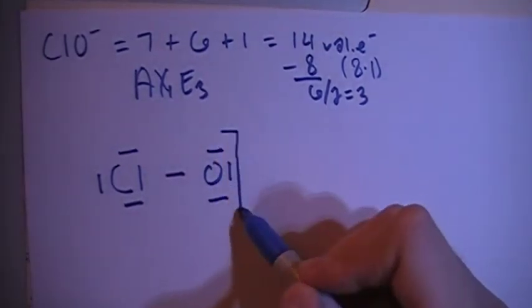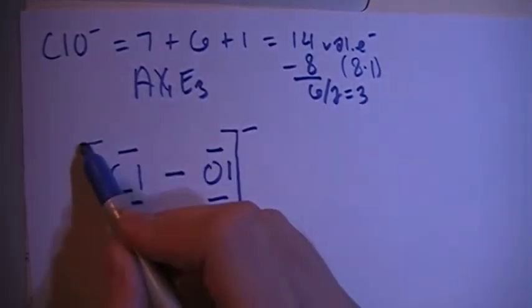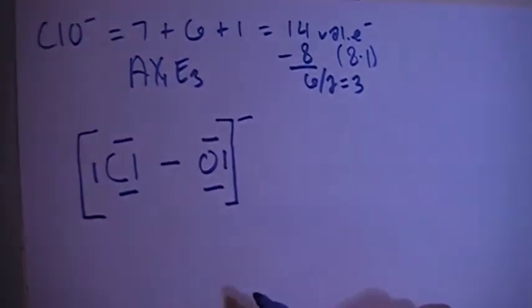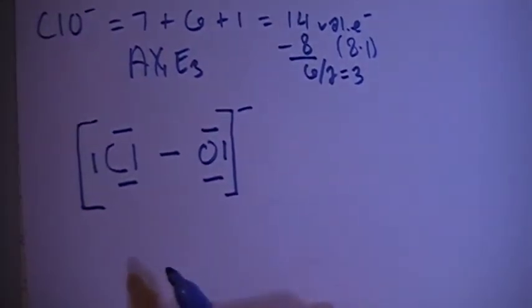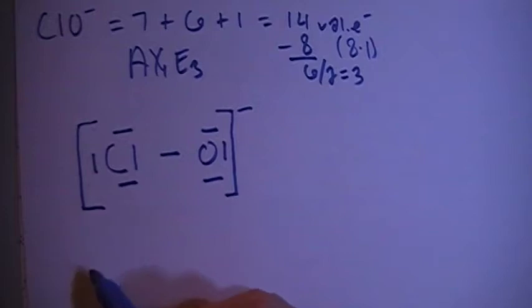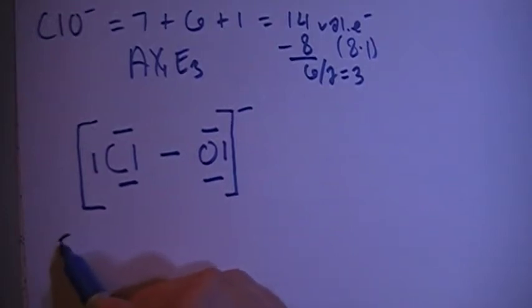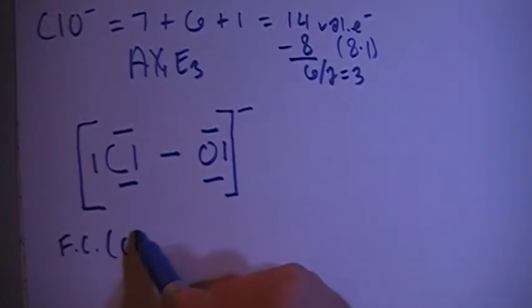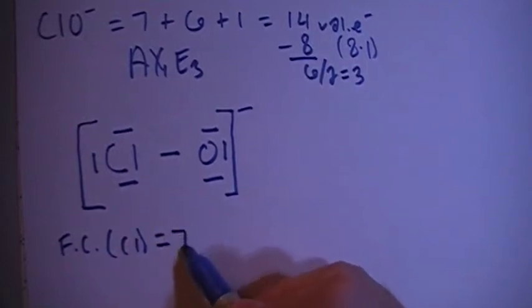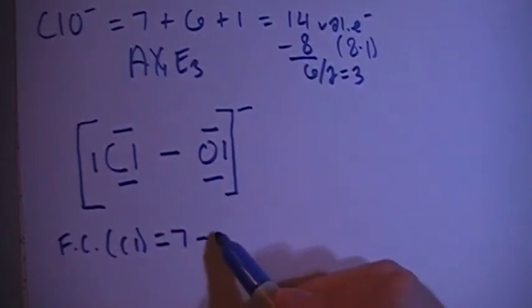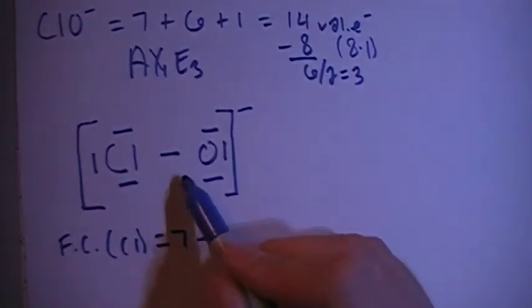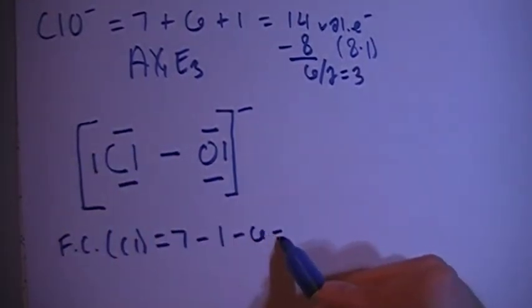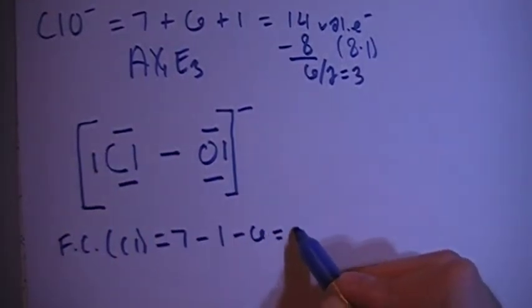Let's go ahead and put in our bracket here for the ion, and put the charge up top. Now let's check the formal charge to make sure this is correct. The formal charge on the chlorine is going to be 7 valence electrons brought in, minus 1 bond, minus 6 non-bonding electrons, for a formal charge of 0.